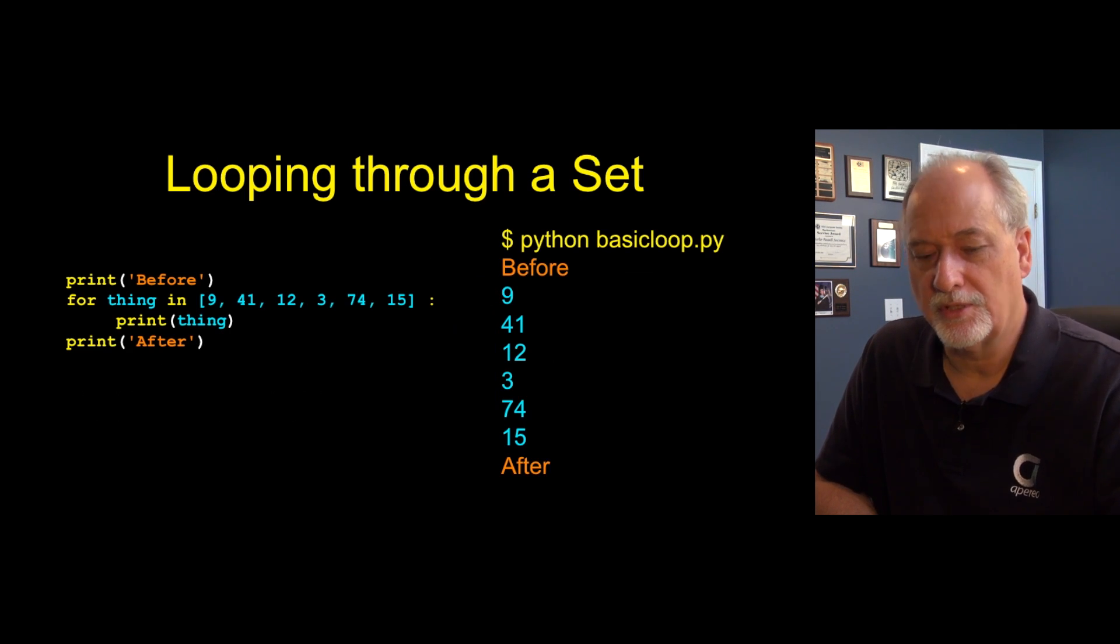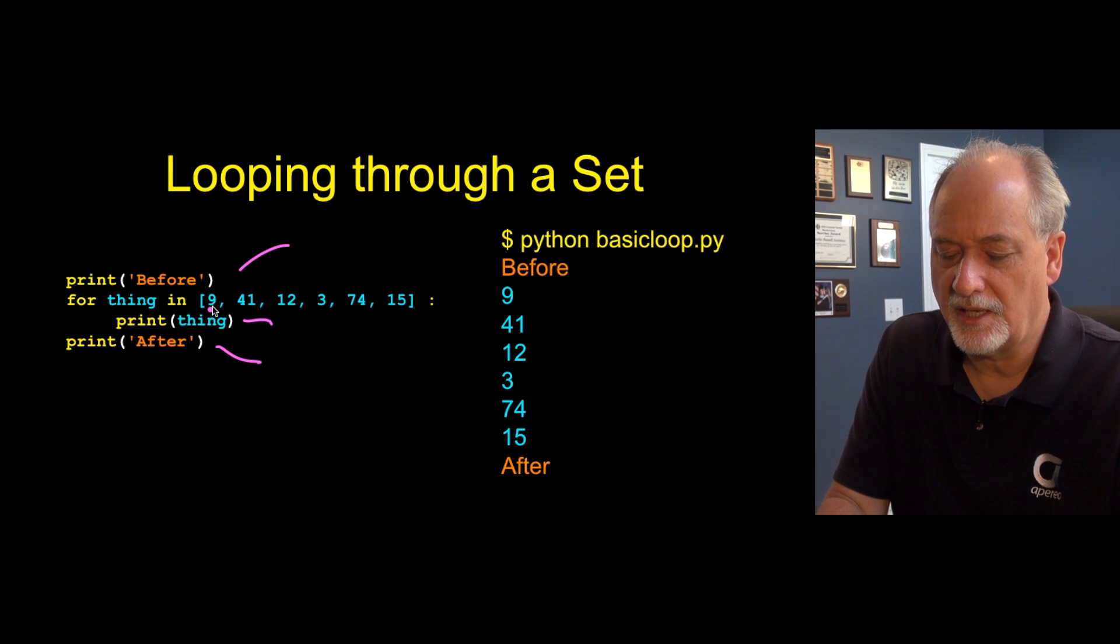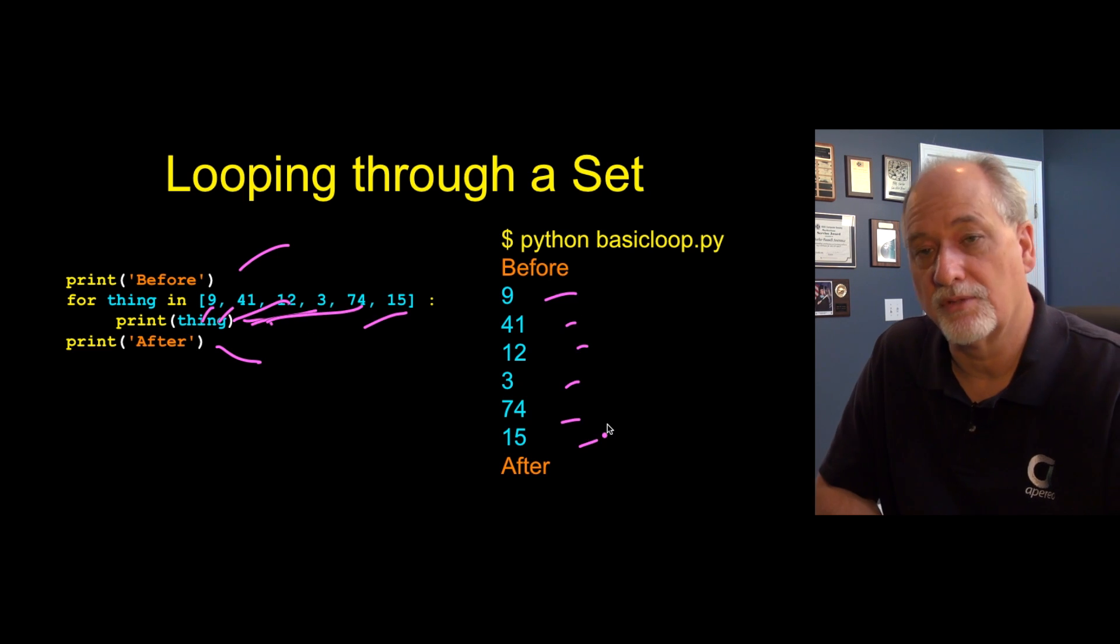We're going to use this loop. It's just going to loop through a set of six numbers over and over again. We're going to do something before the loop, we're going to do something after the loop, and then we're going to run the loop some number of times. In this case, thing is our iteration variable because I'm using un-mnemonic variables now. So it's going to run 9, 41, 12, 3, 74, and 15. It's going to run and print these things out, so it runs this loop six times.